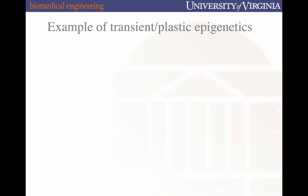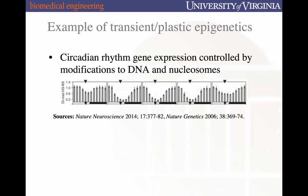An example of transient or plastic epigenetic changes — meaning changes that can revert back — is the circadian rhythm. Looking at the x-axis as time across a 12-hour cycle, certain sites of our genome tied to circadian rhythm show changes in activation state and accessibility that vary throughout the day, correlated with our circadian rhythm.